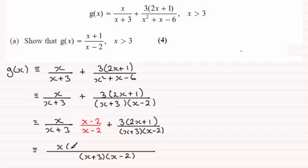This one here just stays as plus 3 times 2x plus 1. So all I need to do now is just simplify the numerator.